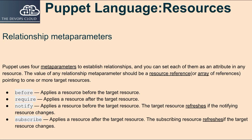Puppet uses four meta-parameters to establish relationships, and you can set each of them as an attribute in any resource. The value of any relationship meta-parameter should be a resource reference or array of references pointing to one or more target resources. 'Before' applies a resource before the target resource. 'Require' applies a resource after the target resource. 'Notify' applies a resource before the target resource, and the target resource refreshes if the notifying resource changes. 'Subscribe' applies a resource after the target resource, and the subscribing resource refreshes if the target resource changes.